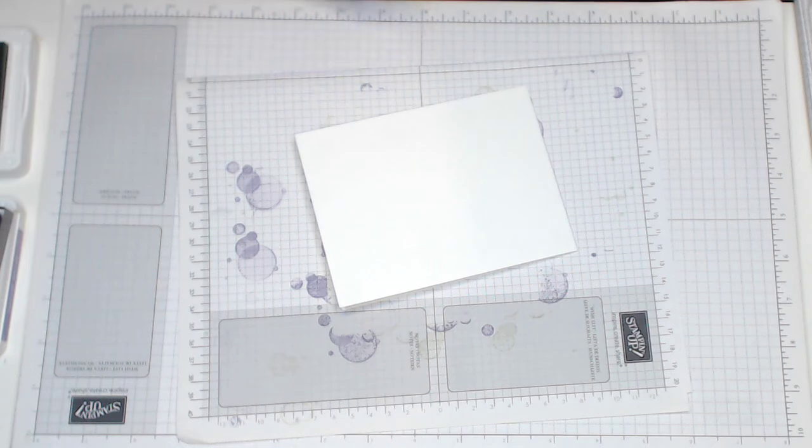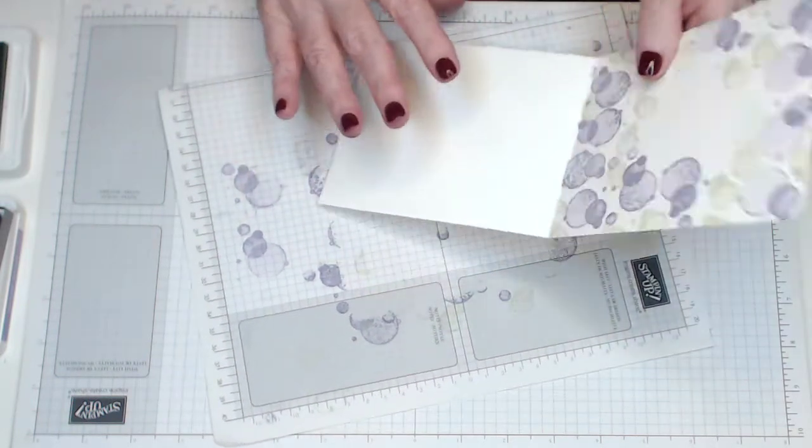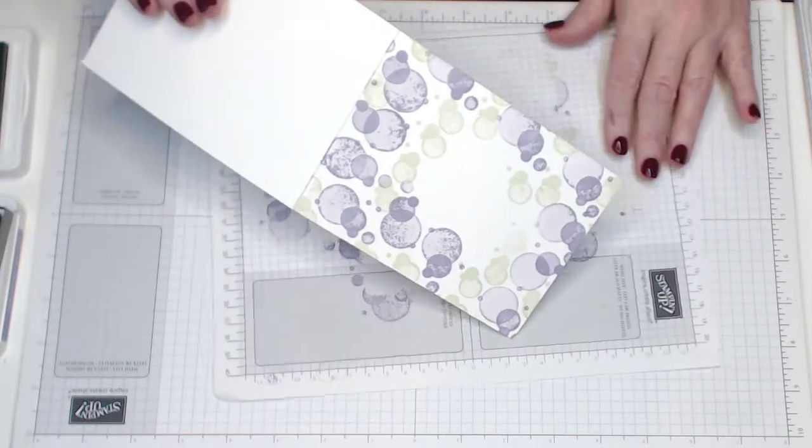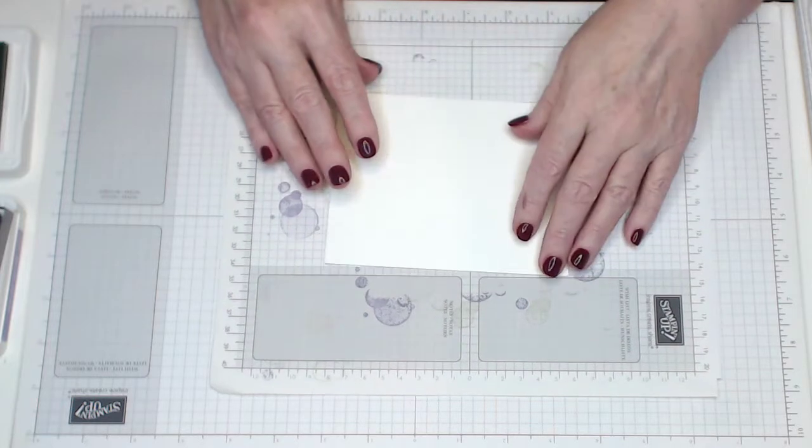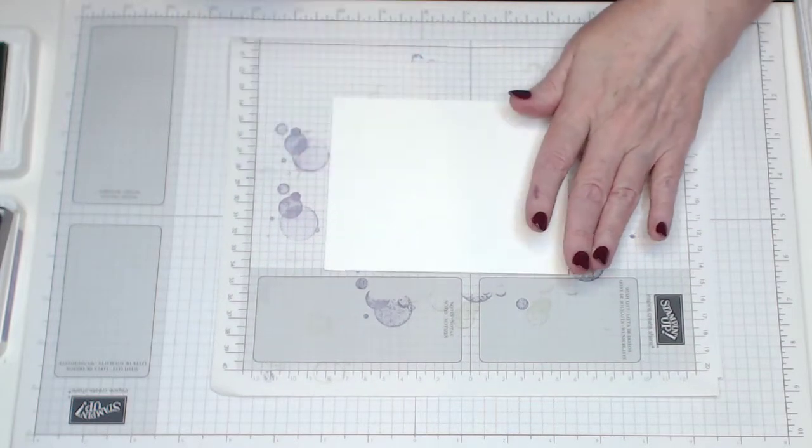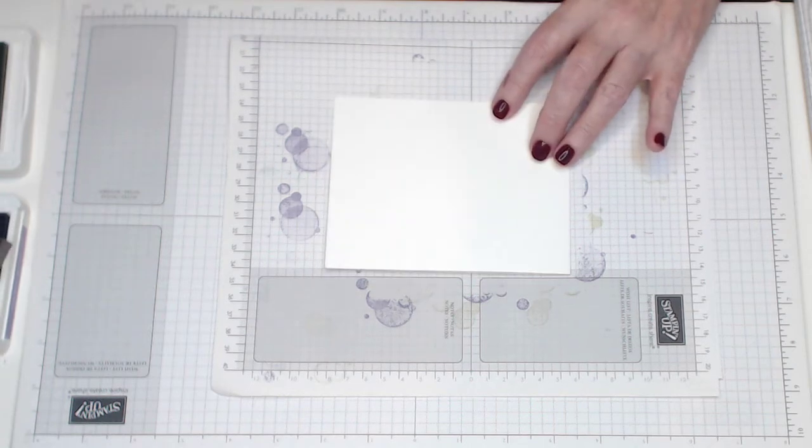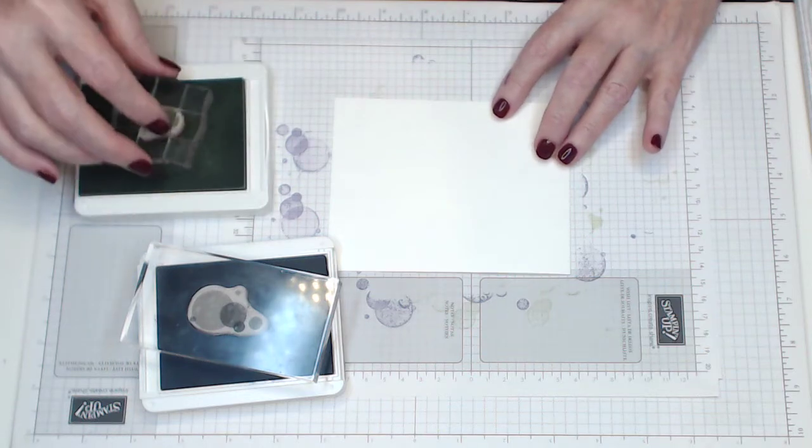First of all, you're going to need your cardstock, which is 11 by 4.25, scored at 5.5. I started doing it and made a mistake in between my filming and have to start again. But I'm not going to waste my cardstock, I'm just going to turn it inside out. So I'm using the Highland Heather and the large voting stamp and the small one.